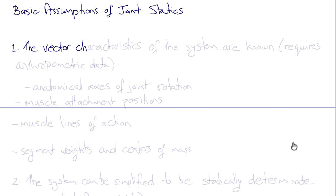So the basic assumptions of joint statics fall into two main groups. The first is that the vector characteristics of the system are known, so that we can draw the free body diagram.